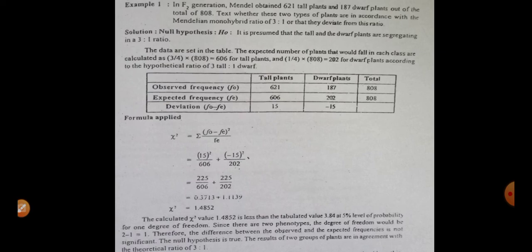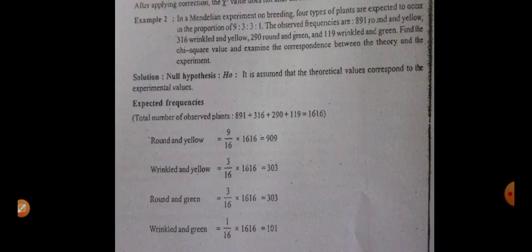Since the calculated value (1.4852) is less than the tabular value (3.84), the null hypothesis is accepted. The difference between observed and expected frequencies is not significant, confirming that tall and dwarf plants are segregating in a 3:1 ratio. The results of the two groups of plants are in agreement with the theoretical ratio of 3:1.